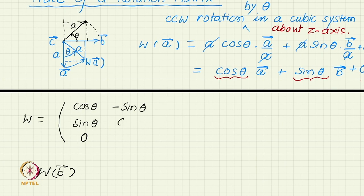The y component will be cos theta and 0. And what about the z components? Because that is on the rotation axis, that is the invariant axis. A vector along the rotation axis do not change. So we have 0, 0, 1.